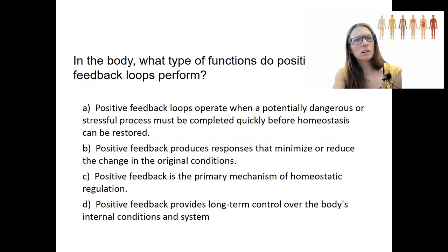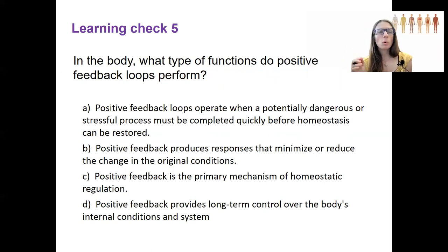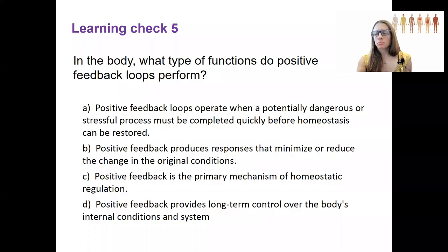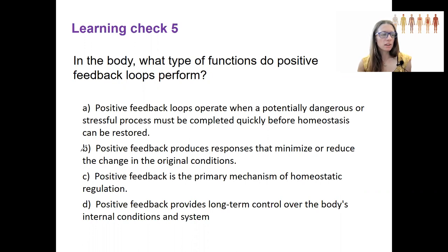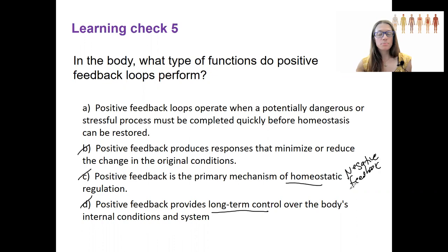Let's do a learning check. What type of functions do positive feedback loops perform in the body? Process of elimination is helpful here: minimizing changes in conditions, homeostatic regulation, and long-term control over internal conditions are all characteristics of negative feedback. In contrast, positive feedback is designed to act quickly and be completed quickly.